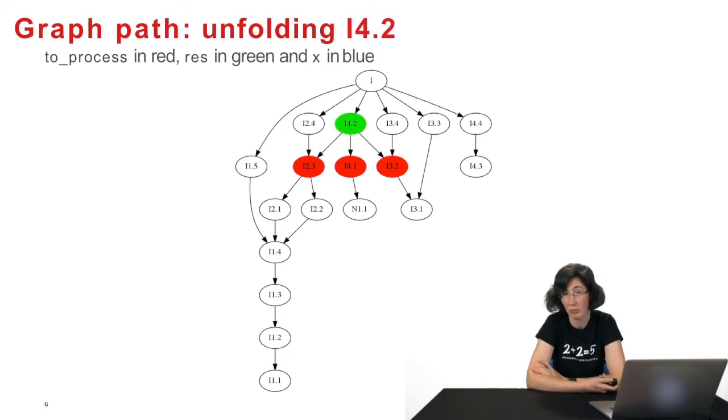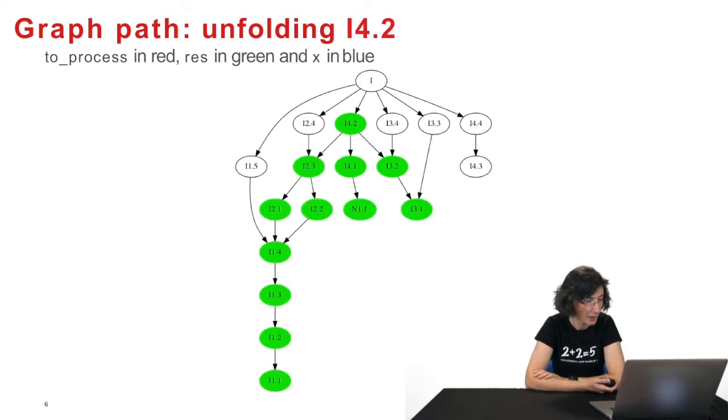Then I take a red node, any one. The data structure will give me one, it doesn't matter. Say I take I3.2. It's the new X. It's the one I'm looking at. I take all its children. It only has one, I3.1, which is added to to_process. I've I3.2 that I've added into the results. I'll iterate like this. Each time, I'll add the children in red, and each time, I'll take a red one and add all its children. This is what we get, to watch I4.2, I have to watch all these sequences.